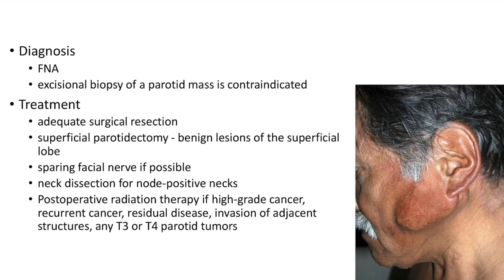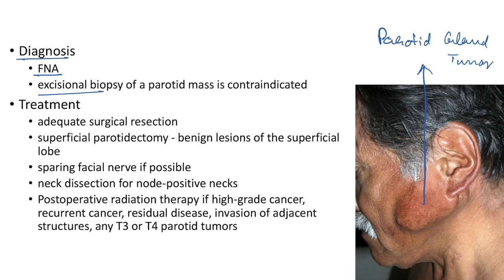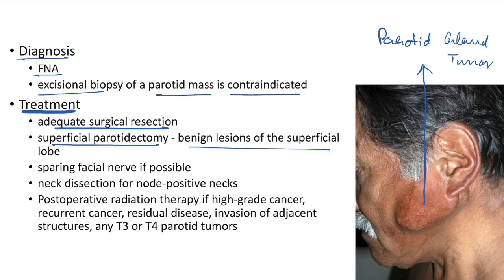Diagnosis of salivary gland tumors: fine needle aspiration can be done. Excisional biopsy of a parotid mass is contraindicated. Treatment: adequate surgical resection. Superficial parotidectomy can be done for benign lesions of the superficial lobe of the parotid gland. Facial-sparing surgery should be performed if possible. Neck dissection should be done for node-positive tumors.